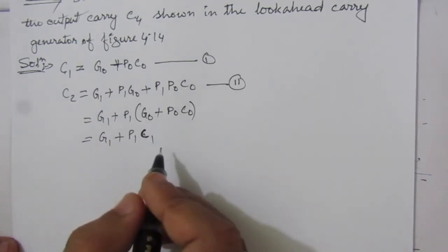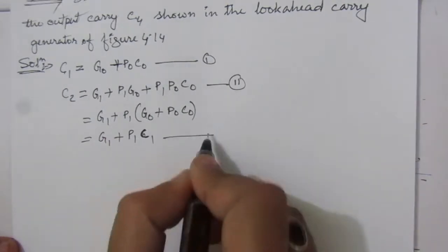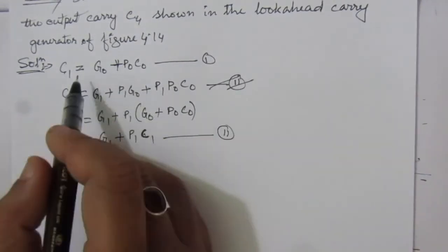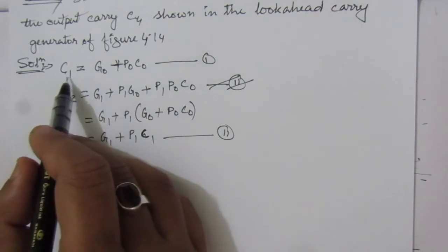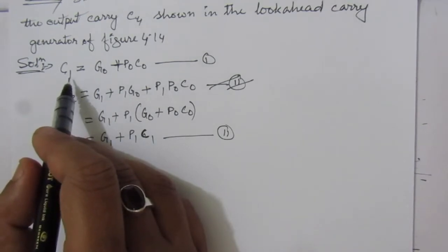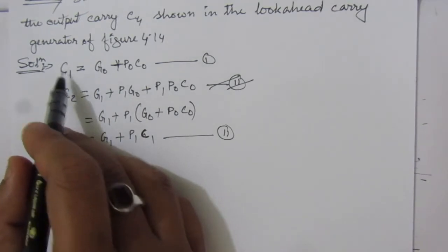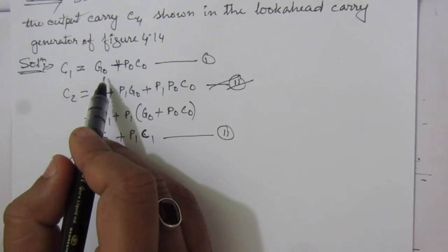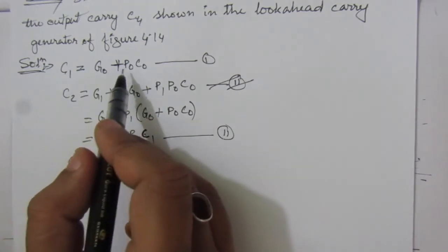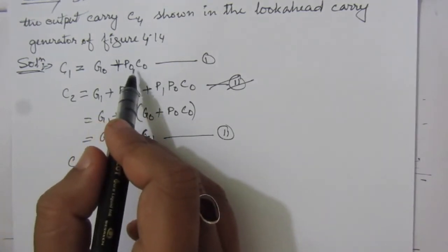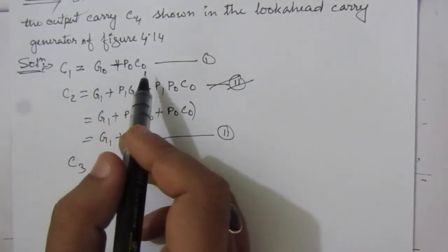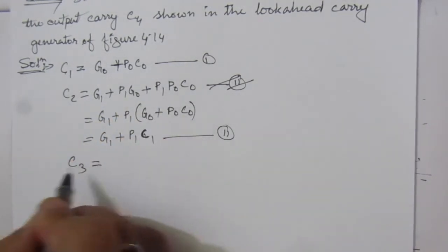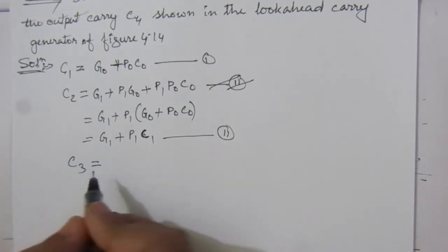Here we can see a general pattern: if we assume n, then Cn = G(n-1) + P(n-1)·C(n-1). For C3, n equals 3, so we can write C3 = G2 + P2·C2.